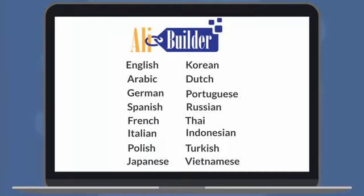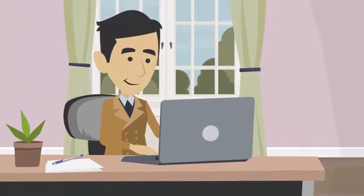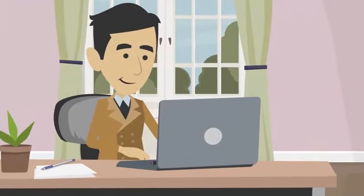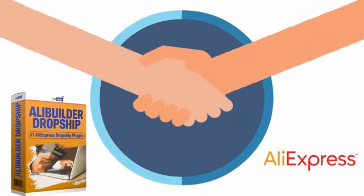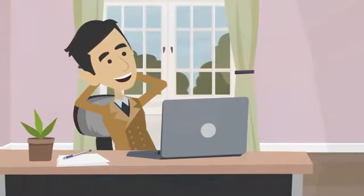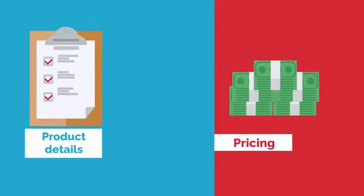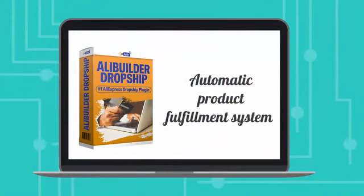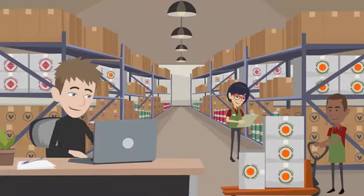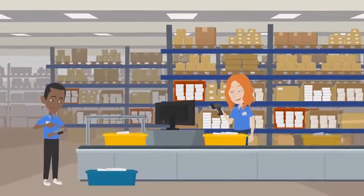And it gets better. With OliBuilder, you never have to worry about checking AliExpress for product availability updates or other changes. OliBuilder has a direct link with AliExpress, and if anything changes with a product, it's updated in real time, so you can rest assured you are working with the most current product details, pricing, and availability. There's also an automatic product fulfillment system built right into OliBuilder that sends new orders to your vendors on autopilot and syncs tracking data codes without you needing to lift a finger.